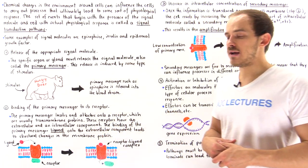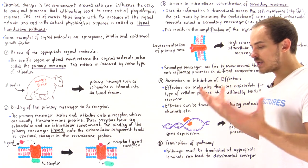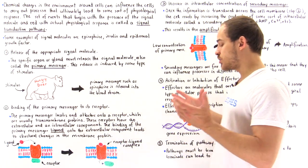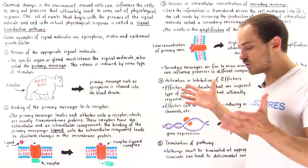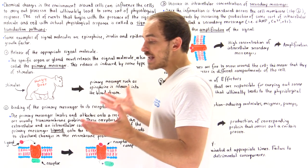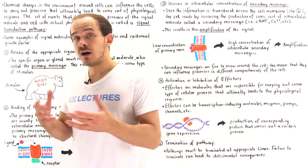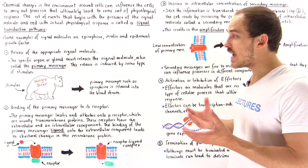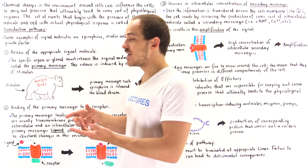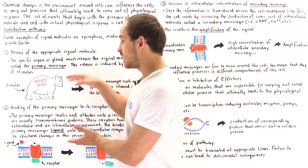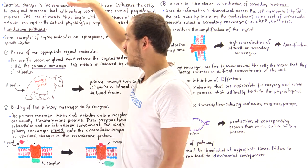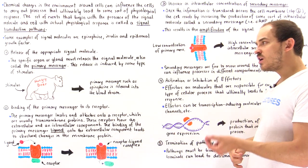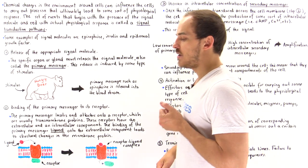To demonstrate what I mean, let's imagine the following scenario, which we're going to use as we go along this lecture. Suppose I'm walking in a national park and I come across a bear that happens to be hungry. If the bear is small I'm clearly not going to run away, but if the bear is large and I panic, I'm going to run. So what happens inside my body when I run?